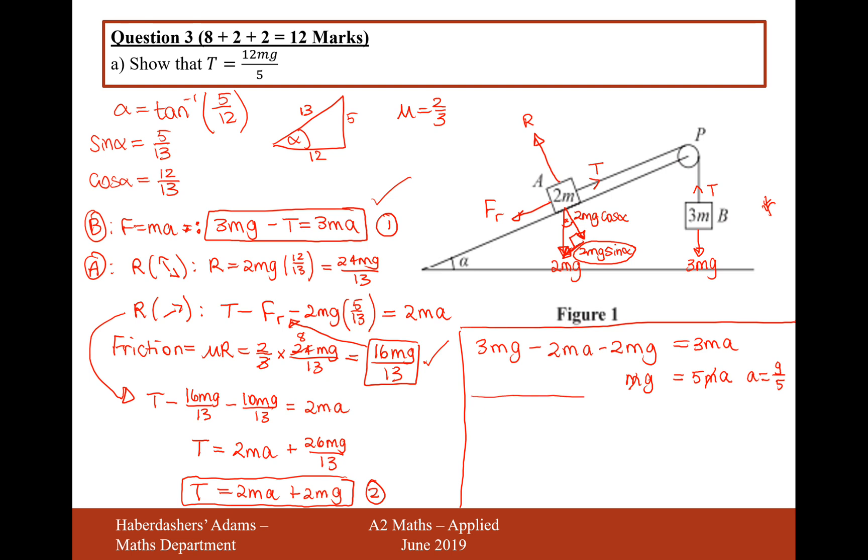Let's now substitute that back into one of these equations. We'll choose the second equation. So T equals 2MA. A is G over 5, so it's 2MG over 5. Add 2MG, and that's 10MG over 5. So 10 plus 2 is 12. So it's 12MG over 5. Lovely, there we are. That's the answer for the value T.